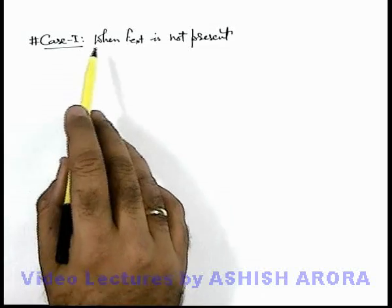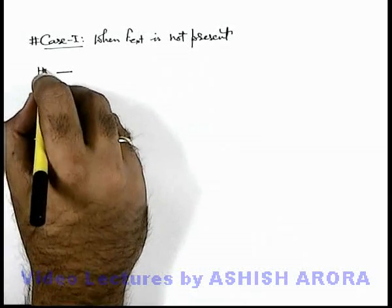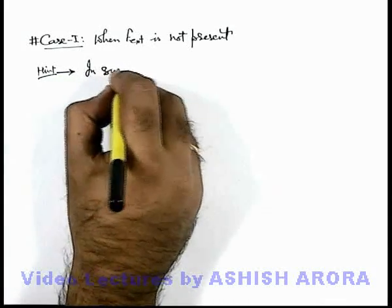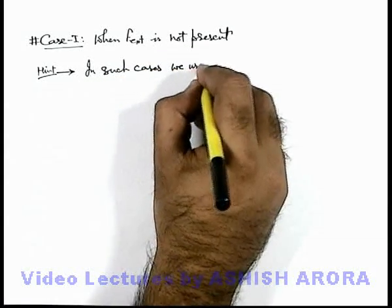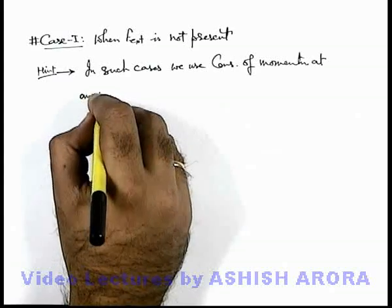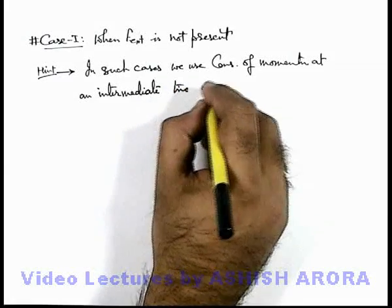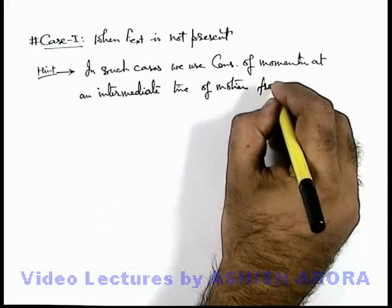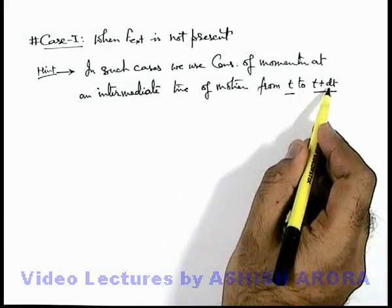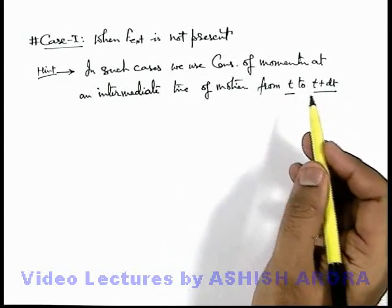Let's first discuss the case when external force is not present. We can simply state: if mass is continuously varying, a hint for solving such a problem of mass variation when external force is not present — in such cases we use conservation of momentum at an intermediate time of motion, from t to t plus dt. So if mass of a body is varying, in a very short duration dt its mass will change by dm. In a small duration t to t plus dt, we conserve overall momentum of the system.